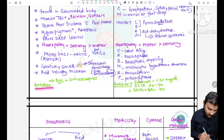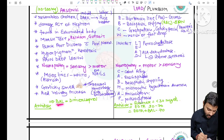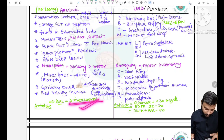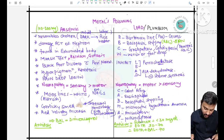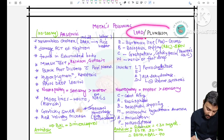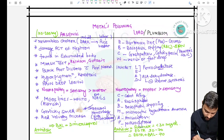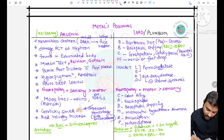The antidote for arsenic poisoning is BAL (British Anti-Lewisite), also called dimercaprol. For lead poisoning, also called plumbism, the BBCW mnemonic is used: B for Burtonian line on the gums (bluish or blackish lines), B for basophilic stippling seen in RBCs, C for constipation or colicky pain also called painter's colic because lead is mainly present in paints, and W for wrist or foot drop due to motor neuropathy.